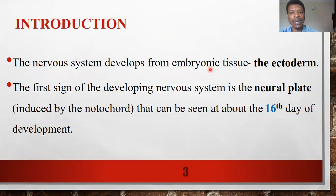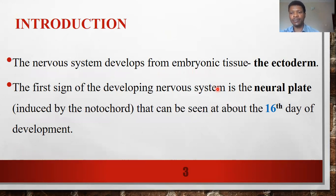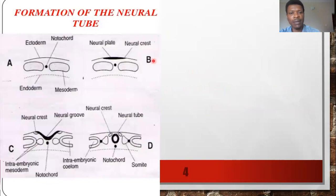After the formation of the three germ layers — the ectoderm, the mesoderm, and the endoderm — there is a first sign of development of the neuroepithelium from the ectoderm. This is induced by the notochord. The ectodermal layer overlying the notochord begins to thicken, and this occurs about the 16th day of intrauterine life.